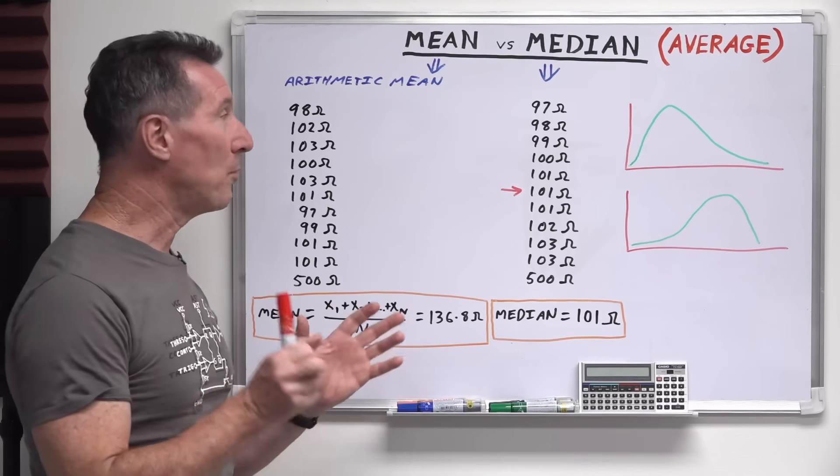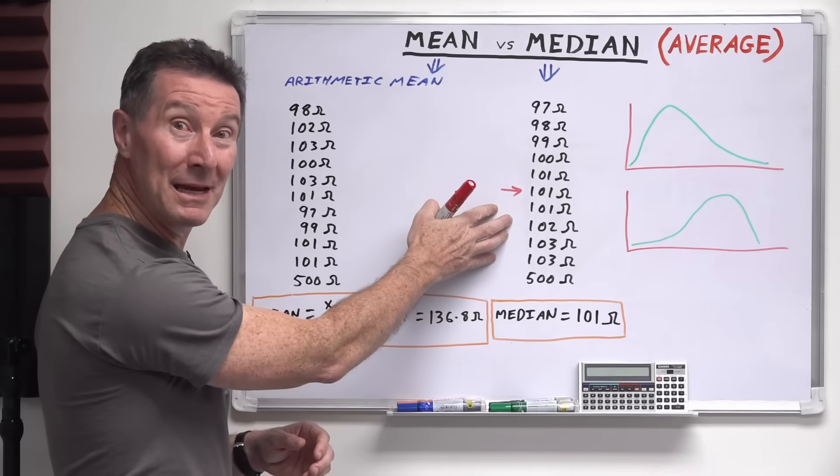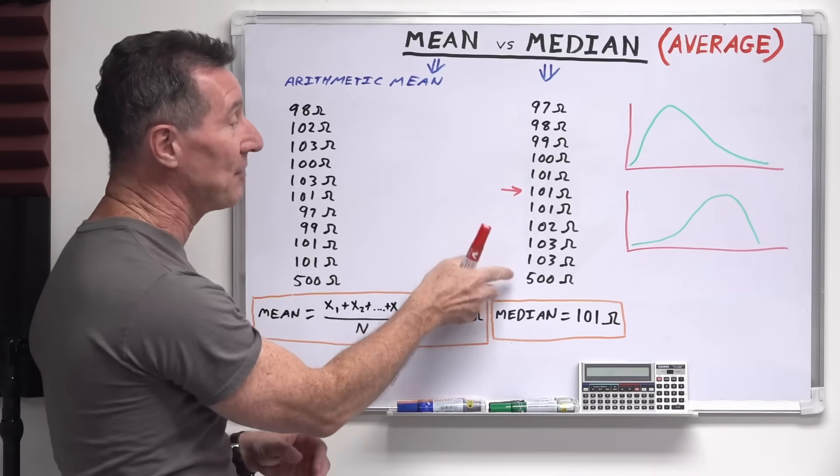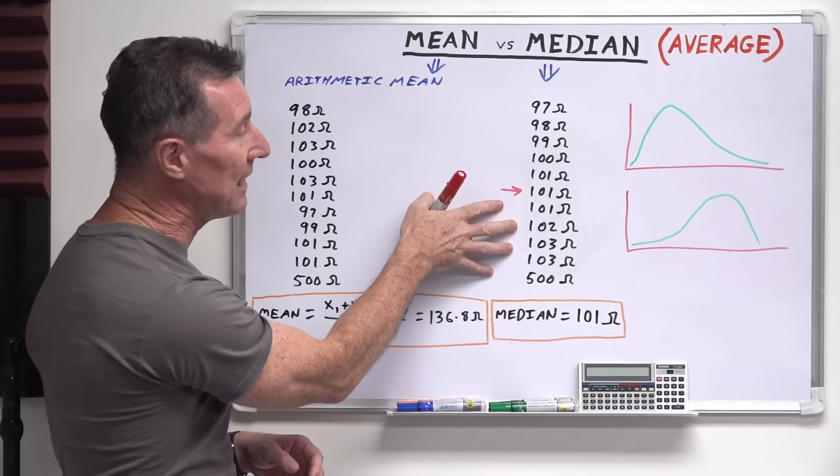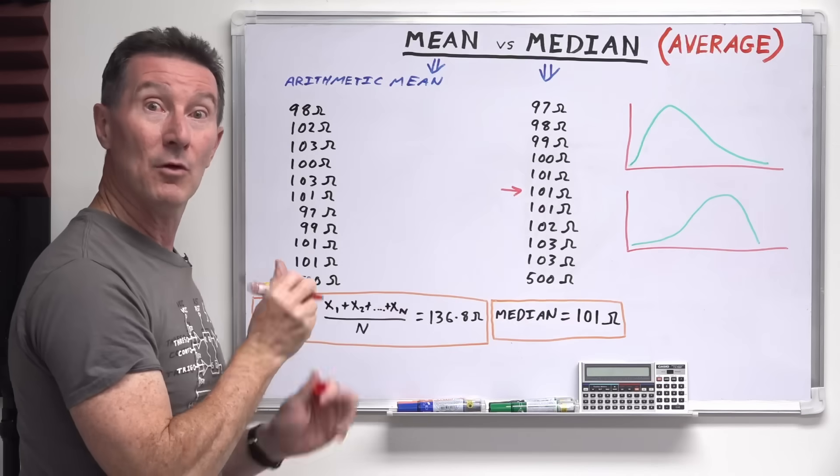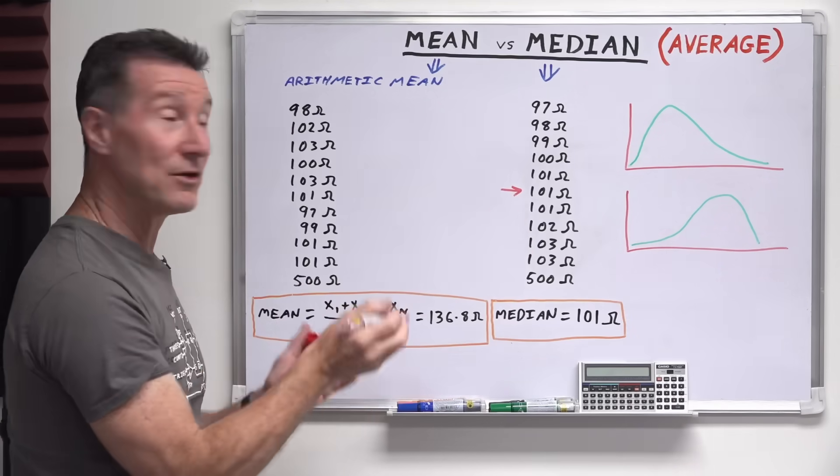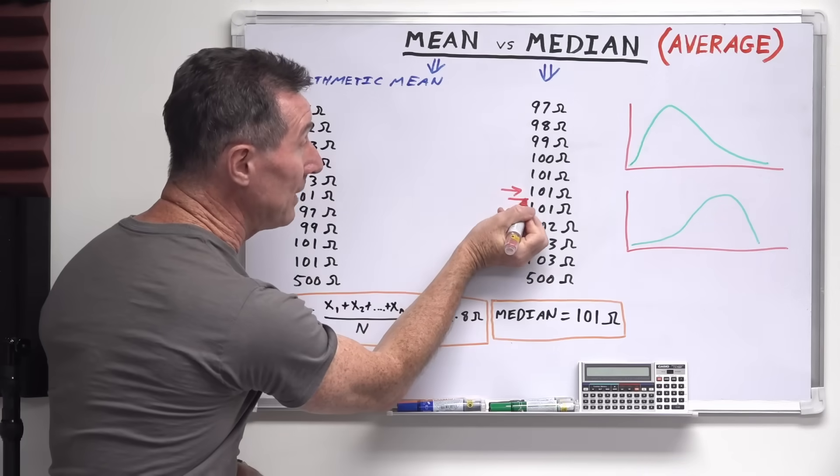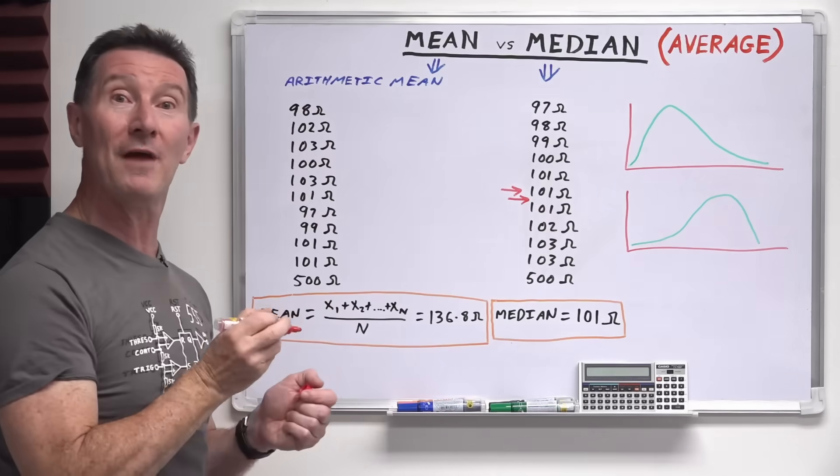And just one small point, when you're calculating the median like this, we happen to have 11 values so we just happen to have an even number either side like this, so we can just choose the middle value. But what happens if you had an even number of values and your split right in the middle ended up between two values?